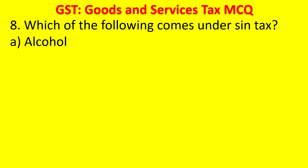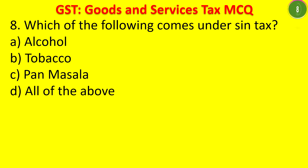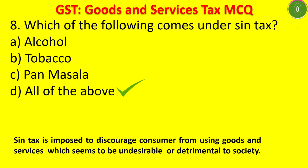Question 8: Which of the following comes under sin tax? A. Alcohol, B. Tobacco, C. Pan masala, D. All of the above. The answer is all of the above. Alcohol, tobacco, and pan masala are called sin taxes because they are treated as sins. Sin tax is imposed to discourage consumers from using goods and services that are undesirable or detrimental to society.